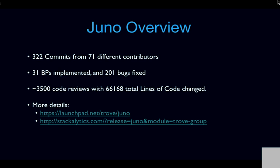Juno was a very successful milestone for us. We had a lot of new contributors contributing code — 322 different commits from 71 contributors. We were able to implement about 30 blueprints and fixed about 200 bugs. There were about 66,168 total lines of code changed. If you're interested in getting more details on the statistics or the Juno release in terms of bugs and blueprints, you can visit the Launchpad page.